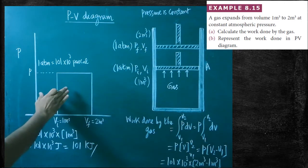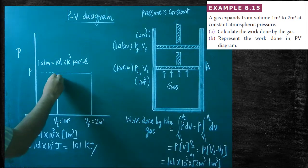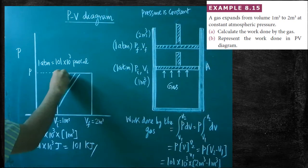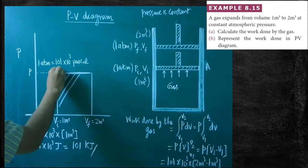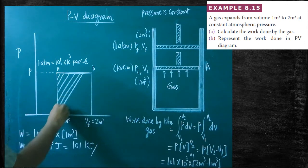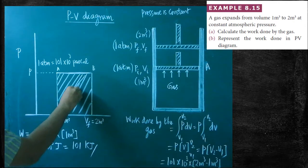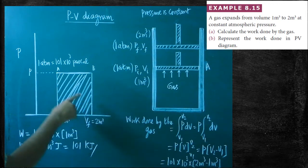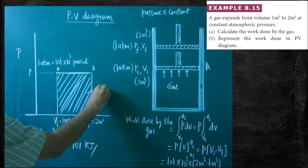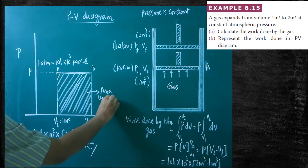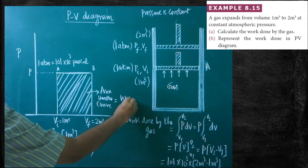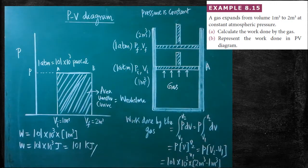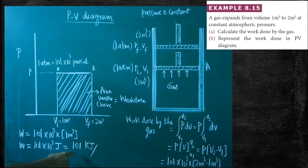Now, the same answer can also be obtained from the PV diagram. We have to plot the graph and find out the area below the line. Here, pressure is kept constant. This is the initial position of the piston and this is the final position. The area below this line gives you the same answer. The answer arrived with the help of the formula is the same as that obtained with the help of the graph. The area under the curve gives you the work done. From formula as well as from the PV diagram, you will obtain the same value of work done.